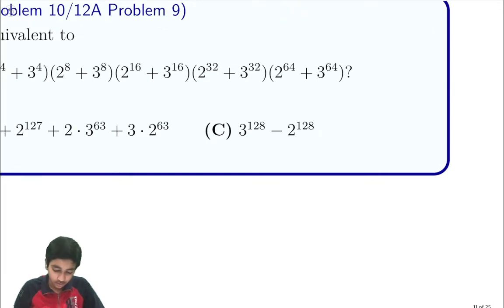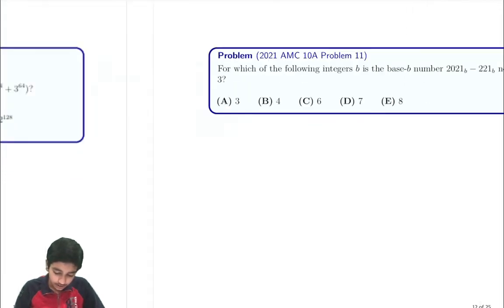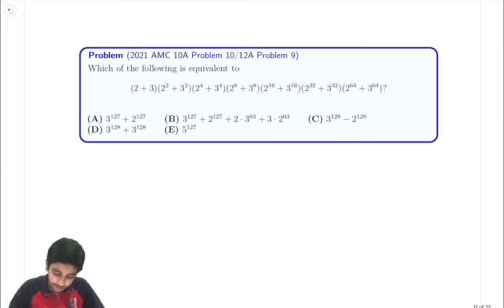Which of the following is equal to 2 plus 3 times 2 squared plus 3 squared times 2 to the 4th plus 3 to the 4th times 2 to the 8th plus 3 to the 8th times 2 to the 16th plus 3 to the 16th times 2 to the 32nd plus so on.